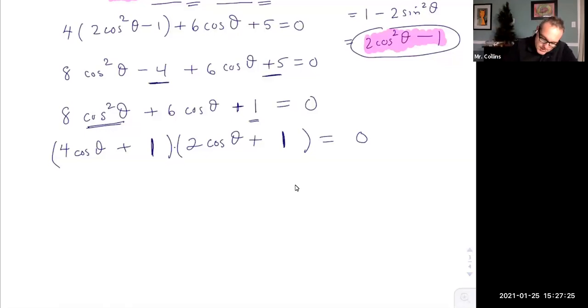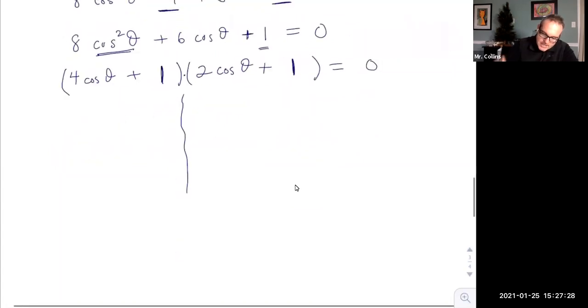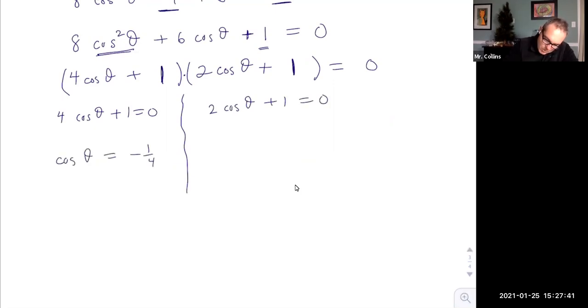We have two things that multiply to zero. You can set each of those to zero. So you got four cosine theta plus one equals zero. Two cosine theta plus one equals zero. That implies cosine is negative a fourth. This implies cosine is negative one half. I did two steps in one. I moved the constant over and then did the division problem.